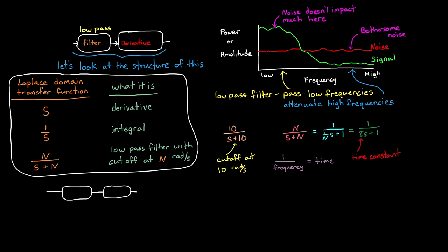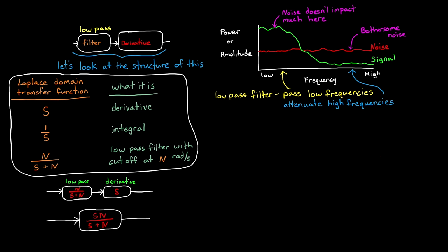All right, so using these definitions, we have a low pass filter and a derivative. And the transfer function of these combined systems is the product of the two, or s times n over s plus n. And from here, we could choose a cutoff frequency and implement a digital version of this in our PID code. But I want to show you an alternative approach to implementing this logic.